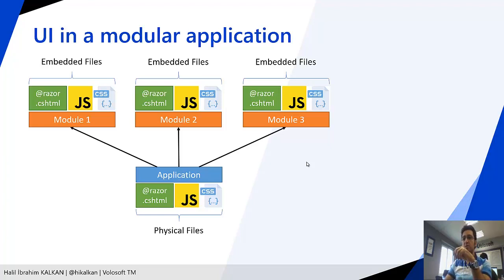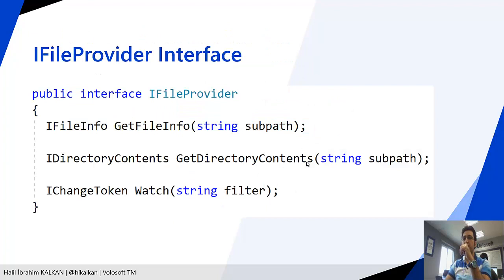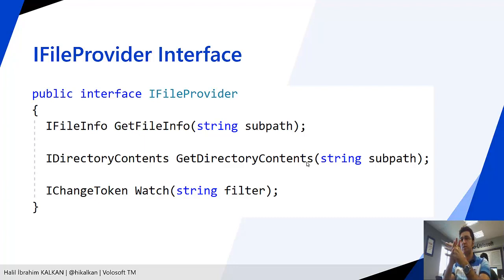ASP.NET Core, by default, looks at the physical file system to find views and other static resources. So we should create a virtual file system to make ASP.NET Core able to read embedded resources from DLL files.